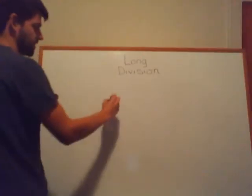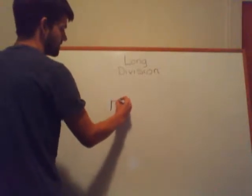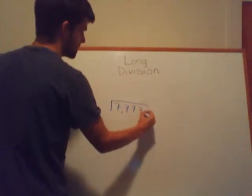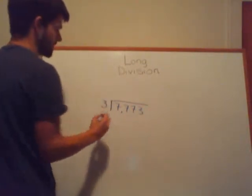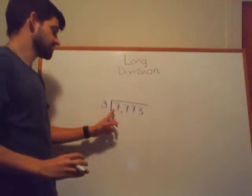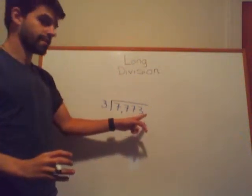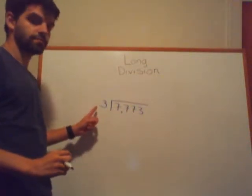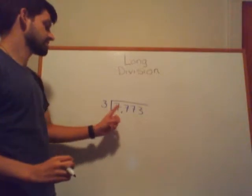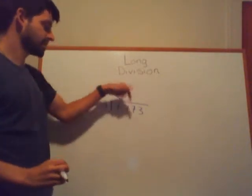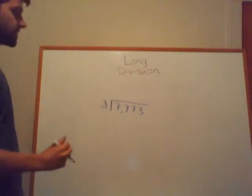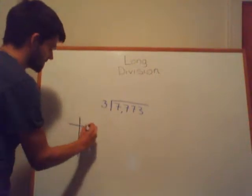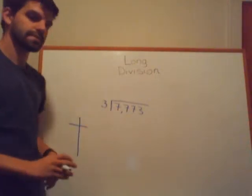For my next example, I have 7,773 divided by 3. 7,773 is our dividend — it's inside the house. And 3 is the divisor, the number that 7,773 is divided by. Let's break this apart step by step by first figuring out how many times 3 goes into 7.